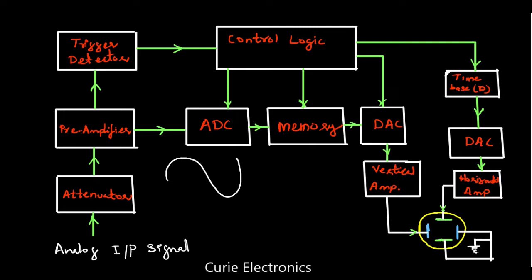From memory the data goes to a DAC. The processor, ADC, memory, and DAC are all connected to the control logic — a microprocessor or FPGA — which coordinates all these operations. From memory, the digitized data goes to a digital-to-analog converter, which reproduces and outputs an analog waveform. That analog waveform goes to a vertical amplifier. From the vertical amplifier — whether it is a CRT or TFT display — the signal drives the vertical plate. Modern oscilloscopes come with a TFT display, but here we show a CRT display.